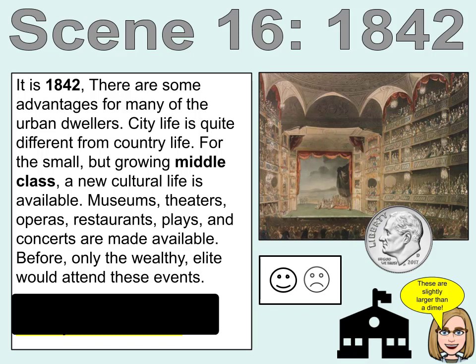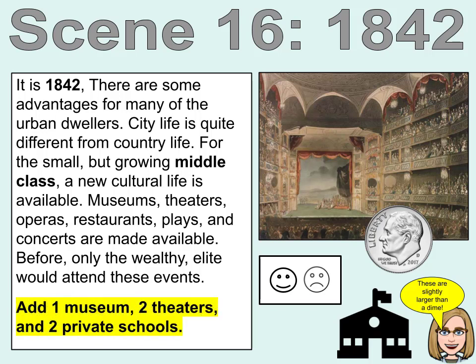Scene 16. It is 1842. There are some advantages for many of the urban dwellers. City life is quite different from country life. For the small but growing middle class, a new cultural life is available. Museums, theaters, operas, restaurants, plays, and concerts are made available — before, only the wealthy elite would attend these events. Add one museum, two theaters, and two private schools.